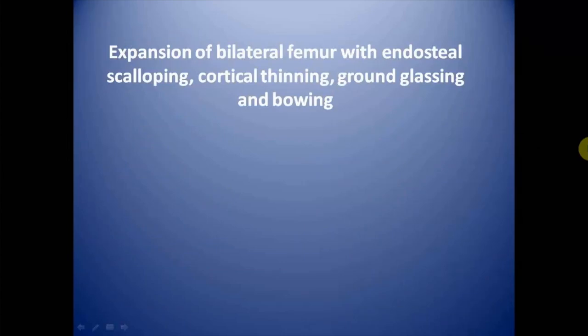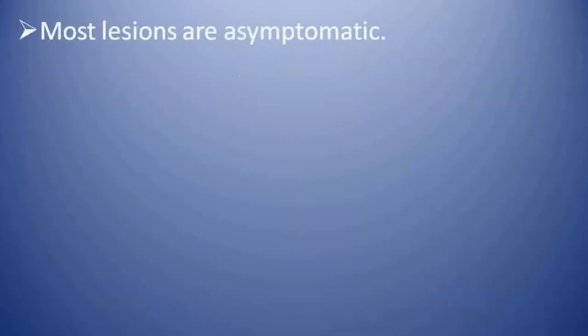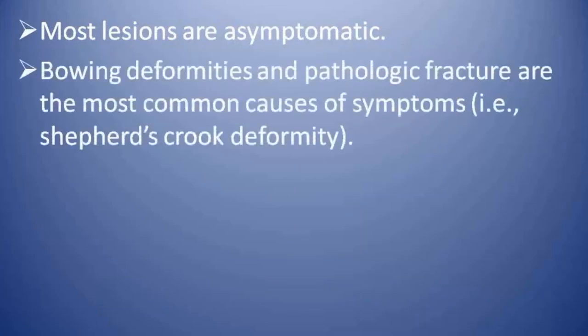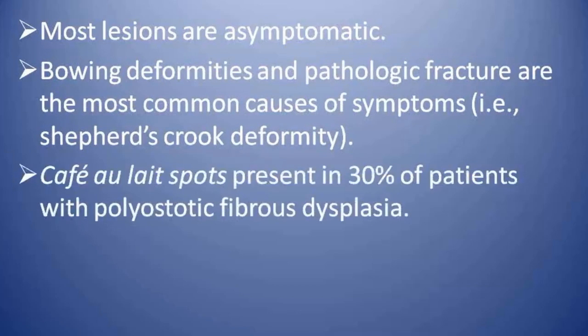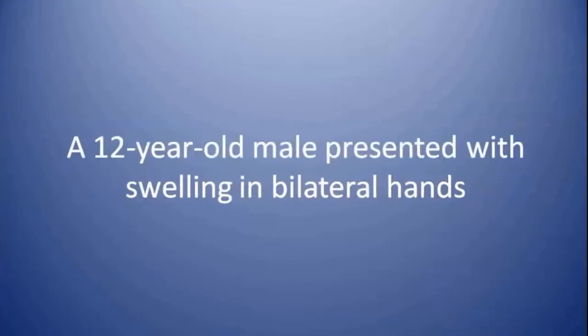This is a case of expansion of bilateral femur with endosteal scalloping, cortical thinning, ground-glass opacity, and bowing — this is a case of polyostotic fibrous dysplasia. Fibrous dysplasia lesions are benign and mostly asymptomatic. Bone deformities and pathological fracture are the most common causes of symptoms. Bone deformities are called shepherd's crook deformities. Café-au-lait spots are seen in 30% of patients with polyostotic fibrous dysplasia.